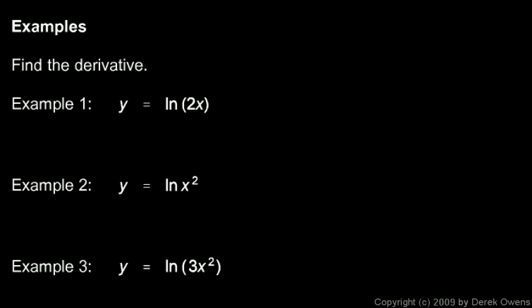Example 1: find the derivative of the natural log of 2x. y-prime is going to be one over 2x, and since 2x is the inner function — this is a composite — I multiply by the derivative of the inner function which is 2. The 2's cancel and I'm just left with 1 over x, the same as the derivative of ln(x) without the 2.